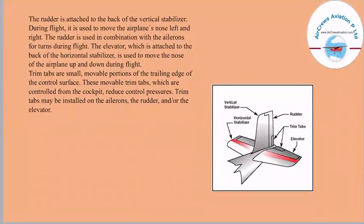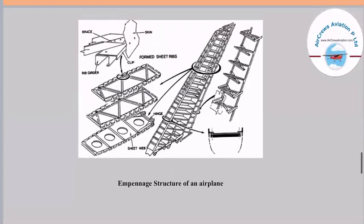The rudder is attached to the back of the vertical stabilizer and is used during flight to move the airplane's nose left and right. It is used in combination with the ailerons for turning. The elevator, attached to the back of the horizontal stabilizer, is used to move the nose of the airplane up and down during flight. Trim tabs are small movable portions of the trailing edge of the control surface, controlled from the cockpit to reduce control pressures. Trim tabs may be installed on the ailerons, the rudder, and/or the elevator.